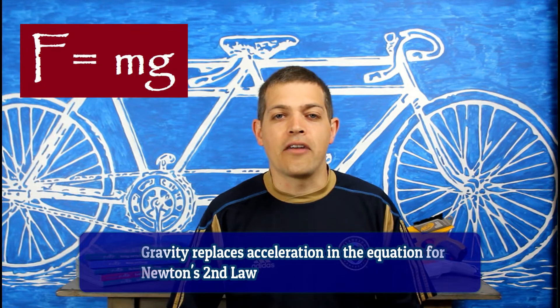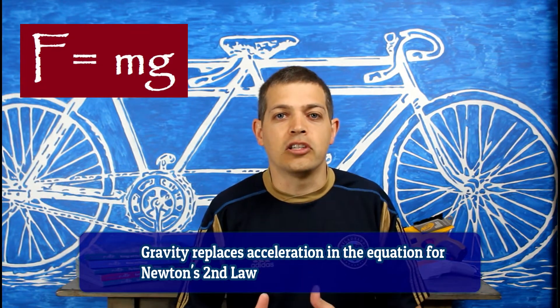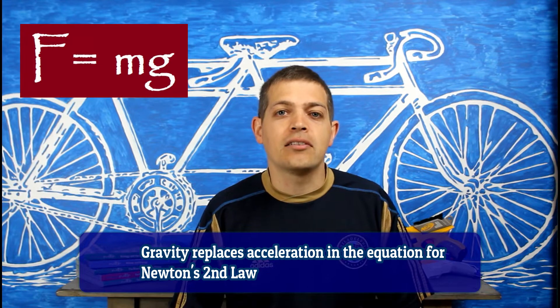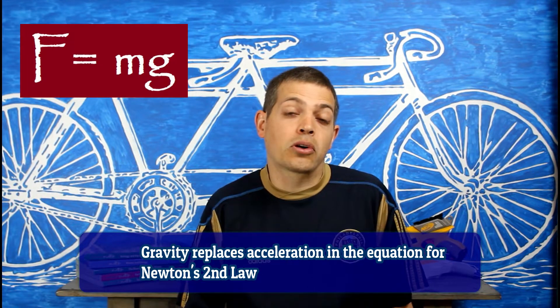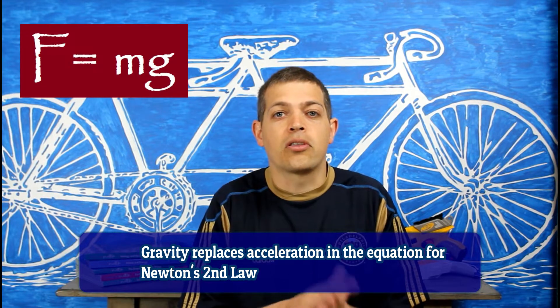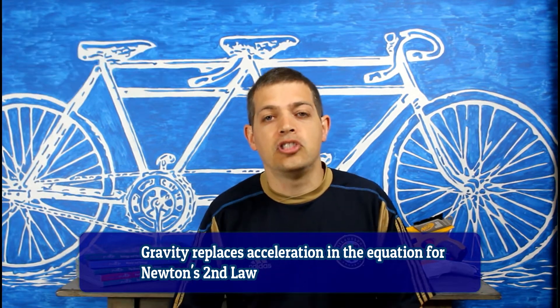We have an equation for this: force equals mass times gravity. That sounds very familiar to Newton's second law — F equals ma, force equals mass times acceleration. What we have here is that gravity is an acceleration, so we replace acceleration with gravity: F equals mg.